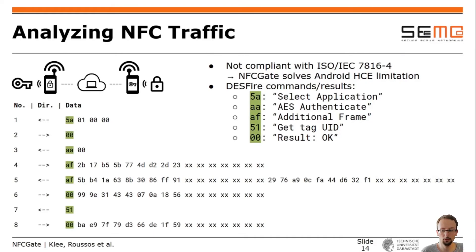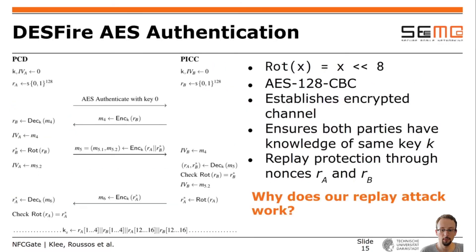This caught our interest, so let's look at the NFC traffic. The traffic between lock and transponder is not compliant to ISO 7816, but as we already know, NFCGate solves this limitation of Android HCE. We see that the lock sends multiple commands of the DESFire command set to the transponder. It begins with selecting an application and starting AES authentication. After authentication finishes successfully, the lock requests the tag UID in message number 7, to which the transponder responds with an encrypted tag UID. The AES authentication protocol establishes an encrypted channel between PICC and PCD and ensures that both have knowledge of the same key.